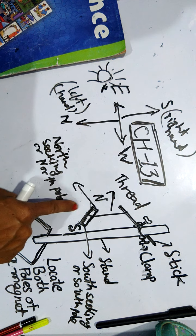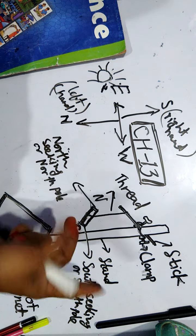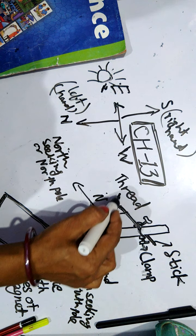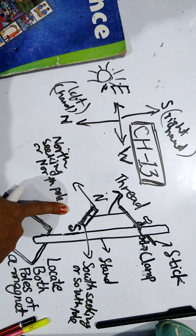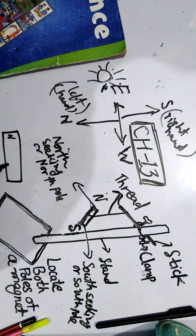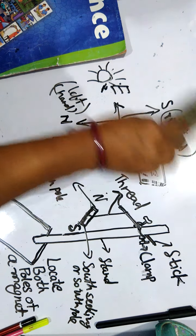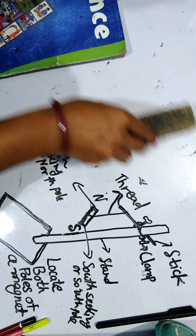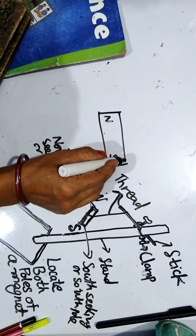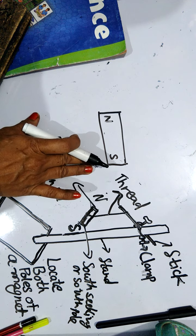We can take any type of magnet — whether it is a cylindrical magnet, a bar magnet, or a horseshoe magnet. If we hang that magnet, those magnets will always align in the same direction. Now we have a bar magnet which has a north pole and a south pole. With the help of this north pole and south pole, we will find the different properties of the magnet.